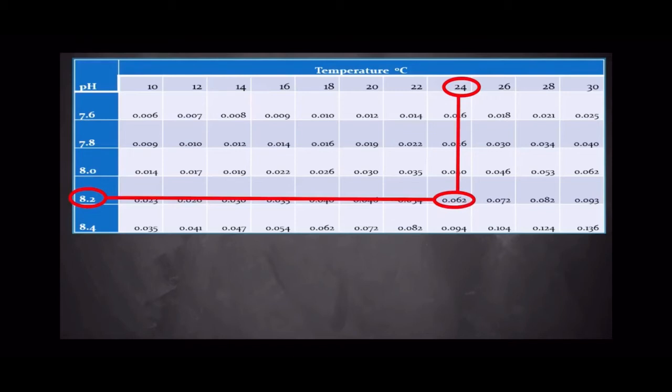And in this example, it is 0.062. And finally, to calculate the amount of ammonia or NH3 that's present, multiply the TAN of 1 ppm by the conversion factor of 0.062, which equals 0.062 ppm of ammonia that's present.